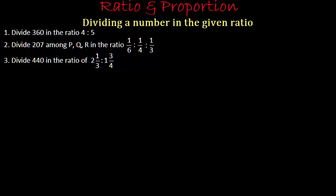In this video we are going to learn how to divide a given number into given ratios. We will solve three problems, and as you can see, all three problems are of different types. In the first, we have to divide a given number into the ratio of 4:5. In the second, we have to divide a number in a fractional ratio. And in the third problem, we have to divide the given number in the ratio of mixed fractions.